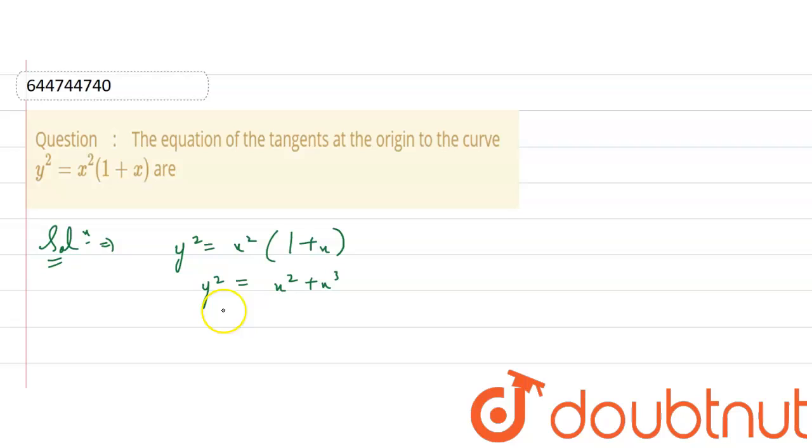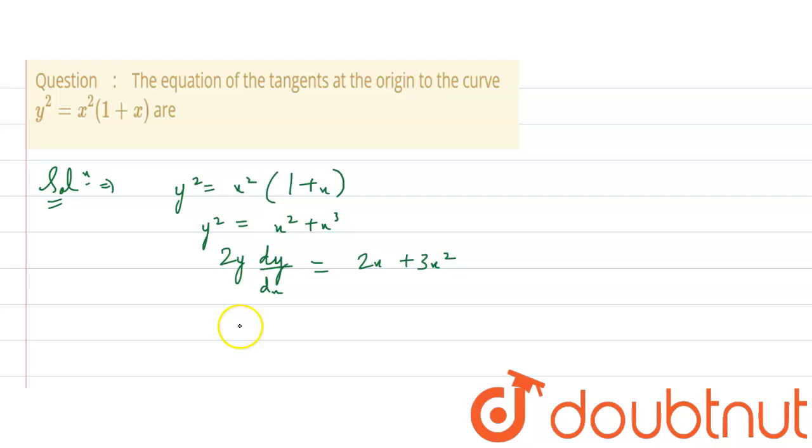So now, if we differentiate it, that is equal to 2y into dy by dx equals to 2x plus 3x square. From here we find dy by dx as dy by dx is the slope. So, 2x plus 3x square upon 2y.